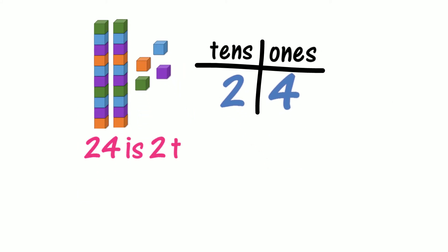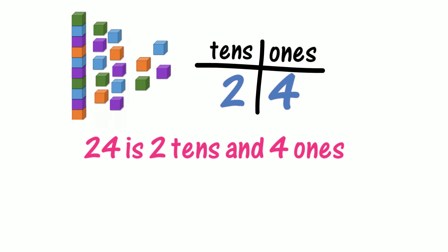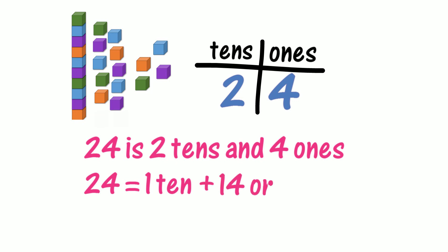Could we describe 24 as two tens and four ones using standard place value? Let's investigate how we can describe 24 using non-standard place value. Let's break one of our tens into ten ones. How could we describe 24 now using non-standard place value? How many tens do we have? Do we have one ten? How many ones do we have? Do we have 14 ones? Could we describe 24 using non-standard place value as one ten and fourteen ones?